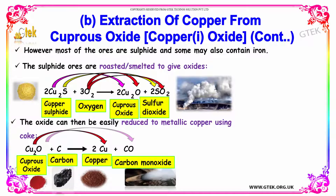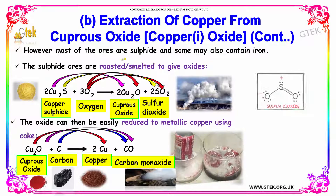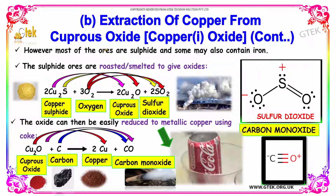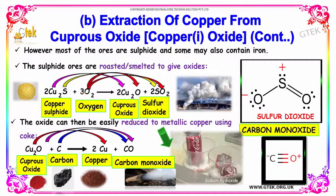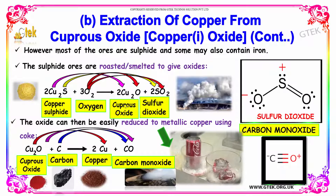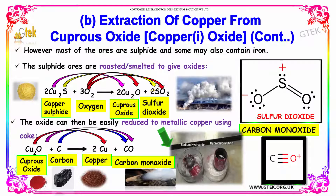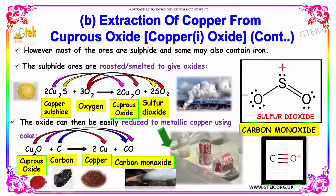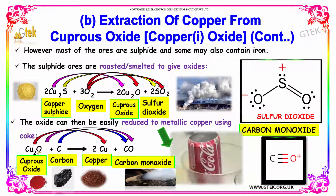We are now looking at the extraction of copper from cuprous oxide. Copper sulphide reacts with oxygen to give cuprous oxide and sulphur dioxide. The oxide can then be reduced to metallic copper using coke — cuprous oxide with carbon gives copper and carbon monoxide.